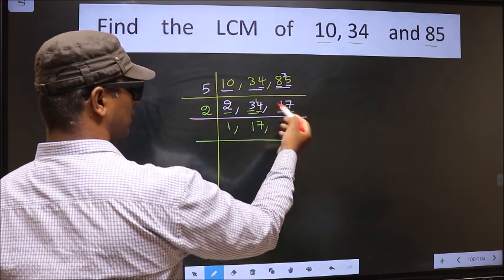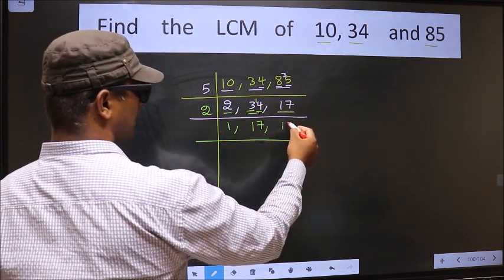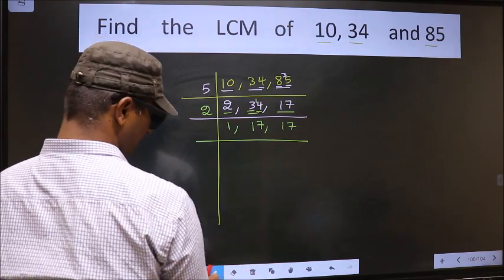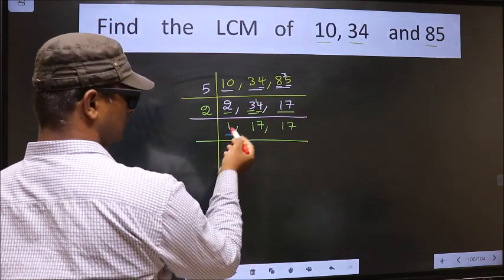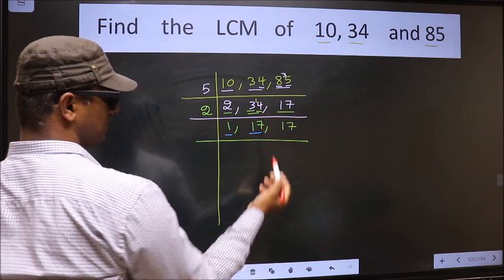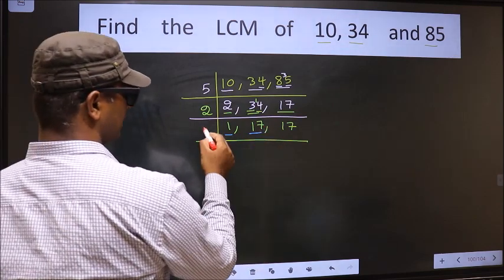The other number 17 is not divisible by 2, so we write it down as it is. We got 1 here, so focus on the other number, that is 17. 17 is a prime number.